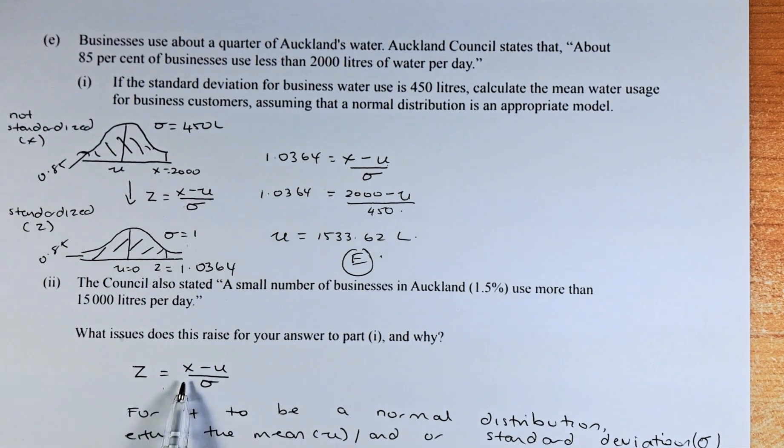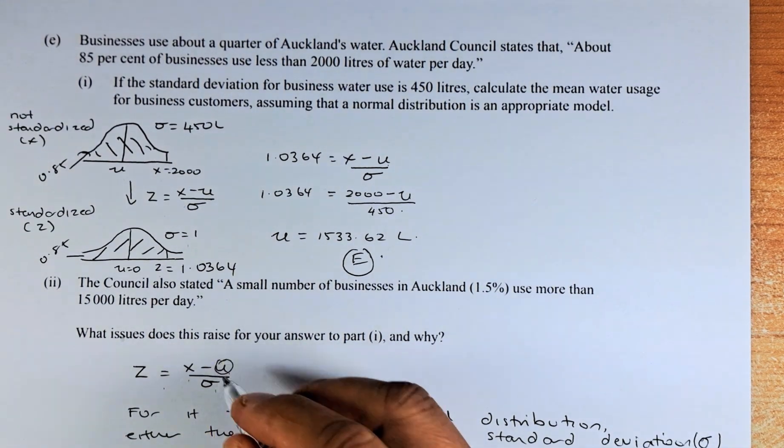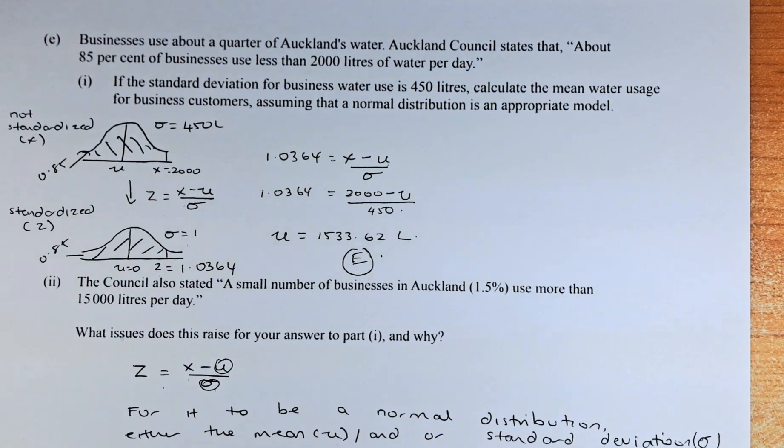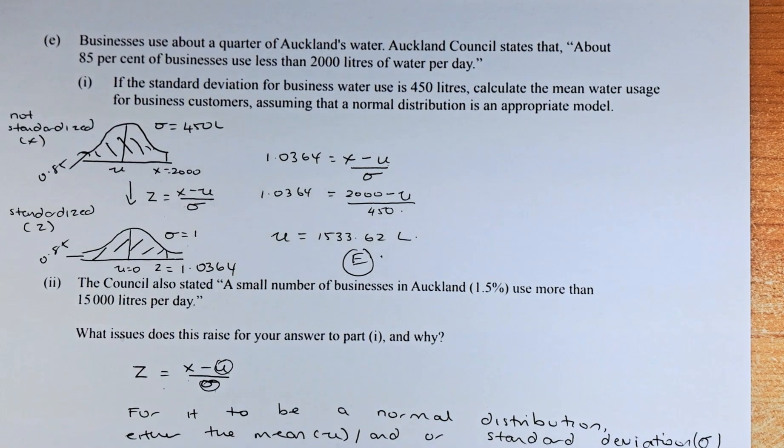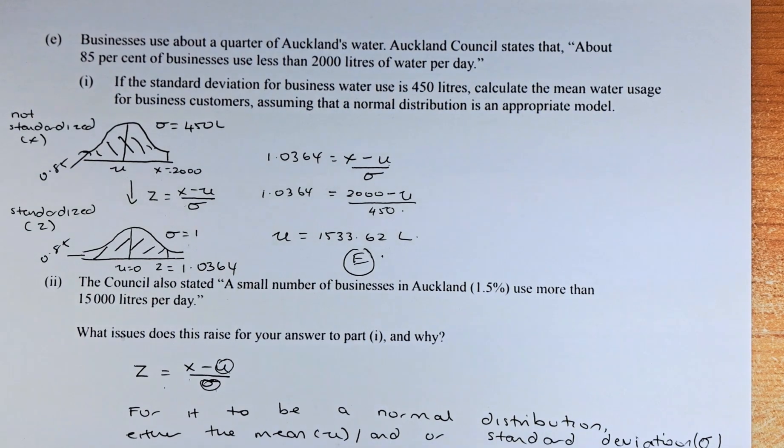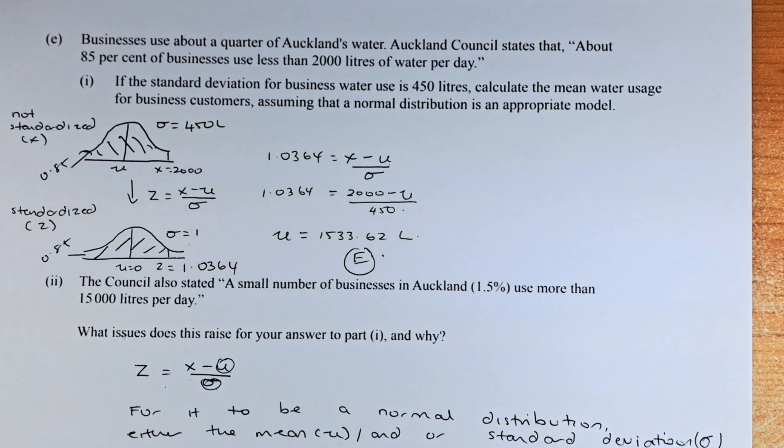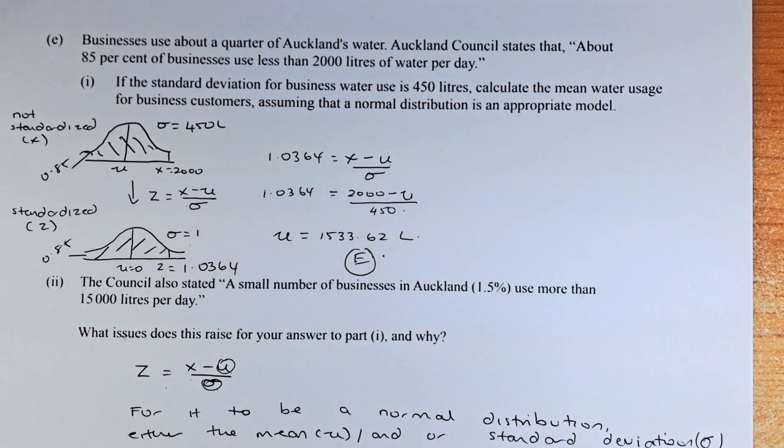The formula is Z equals X minus nu over sigma. For it to be a normal distribution, either the mean, which is the nu, or the sigma, the standard deviation, must be higher than 1,533.62 litres, that is the mean. And the standard deviation must be higher than 450 litres for this to happen and for it to be a normal distribution.